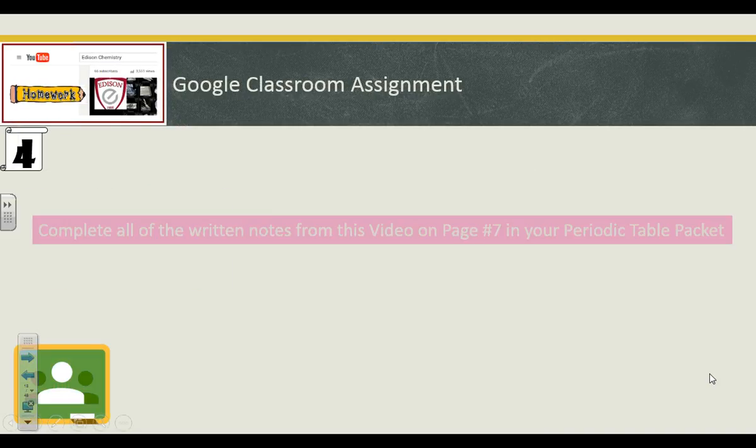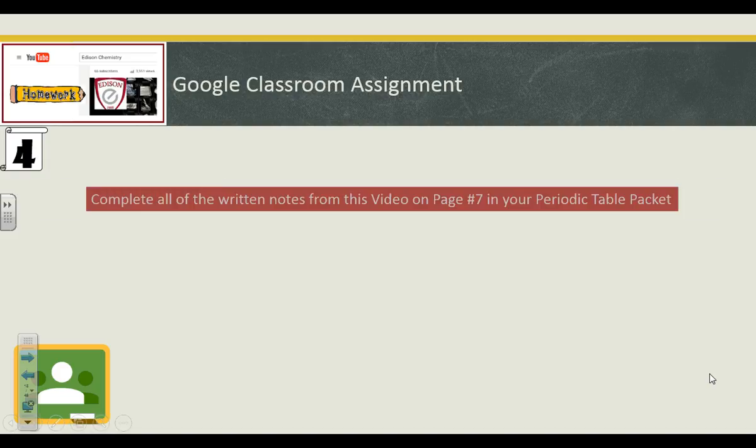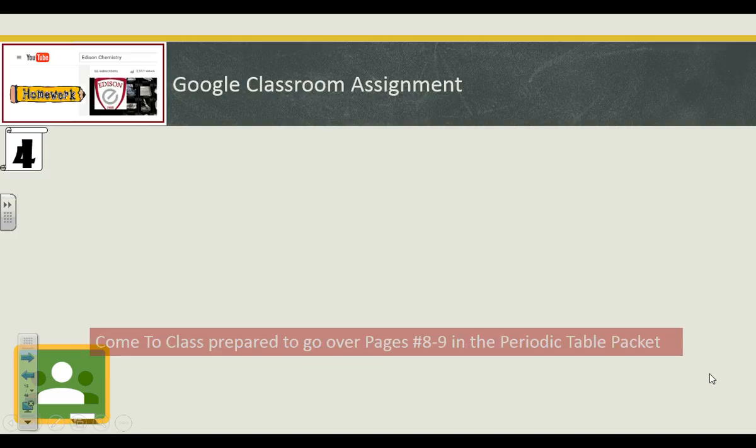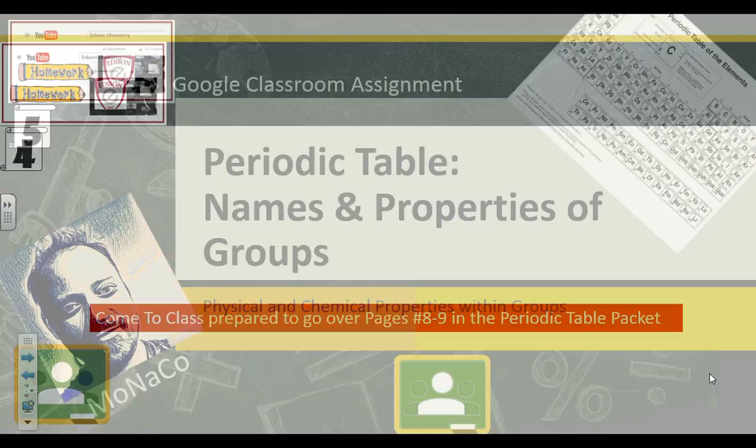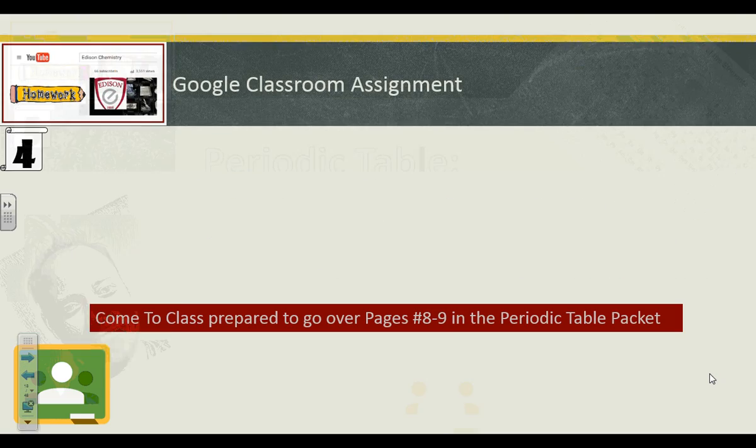A Google Classroom assignment. Written notes, page seven in your periodic table packet. Remember, watch it twice or three times to get the notes, then get the flow, and then get the understanding. There are some practice pages after the Google Classroom assignment that I would love for you to do ahead of time. Come to class prepared to go over pages 8-9 in the periodic table packet. As we progress throughout the year, those practice pages are going to become more and more a part of homework and what you do to just get ready to be in class. Next video is going to be names and properties of groups. It's going to be a long one, so that's why I wanted to keep this one short. Thanks for your time.